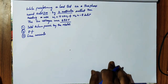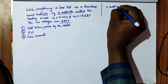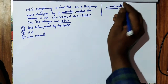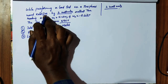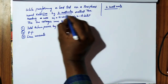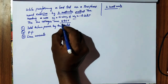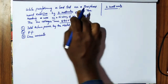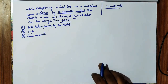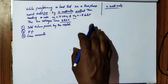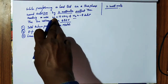This is one more example for the 2 watt meter method. The question is: while performing a load test on a 3-phase wound rotor induction motor by the 2 watt meter method, the readings were W1 and W2, and the line voltage was 440V. The motor is a star-connected load.